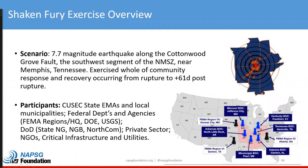A little bit about the exercise: Shaken Fury was a FEMA-led off-year exercise centered around a 7.7 magnitude earthquake just west of Memphis, Tennessee, in the New Madrid seismic zone. This earthquake-prone region touches eight states and four FEMA regions, so a scenario like this is a really good setting to examine the coordinated response and recovery capabilities at the regional level involving the whole community.